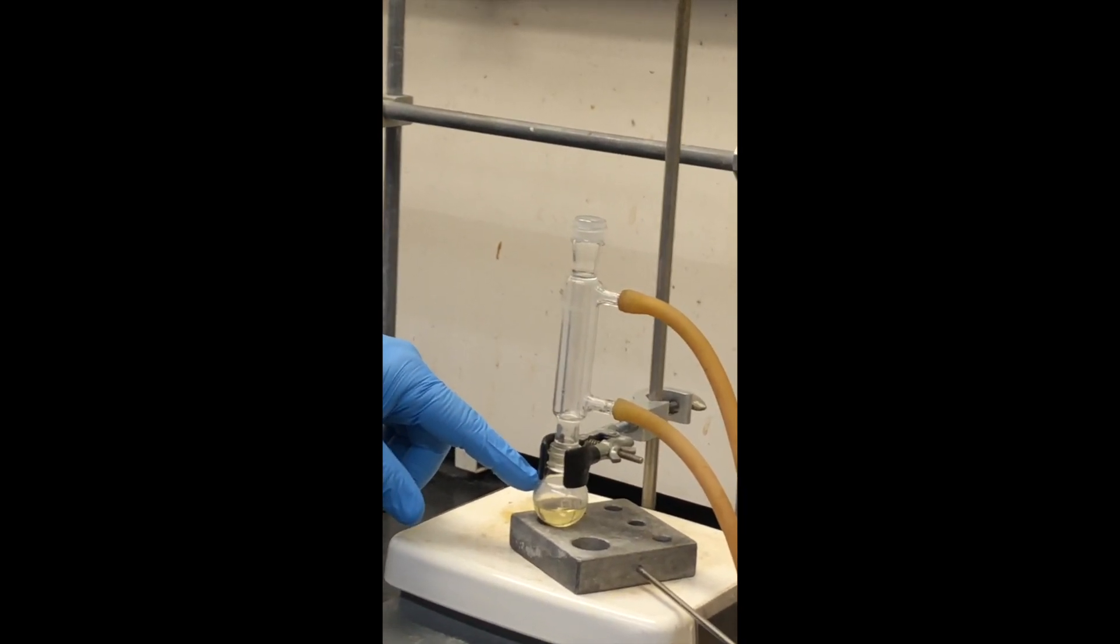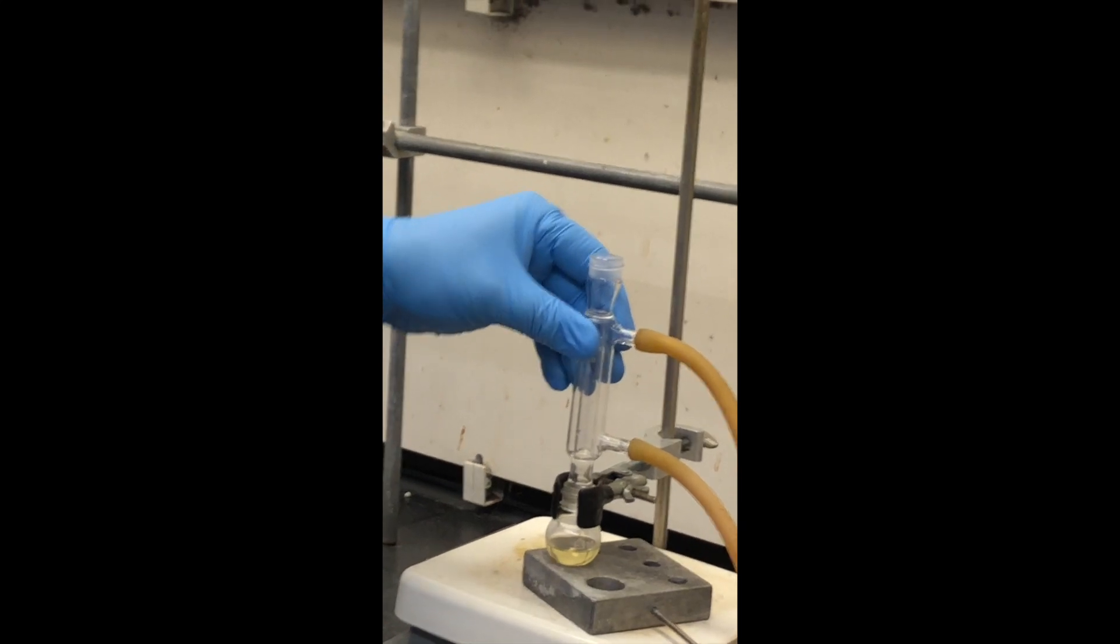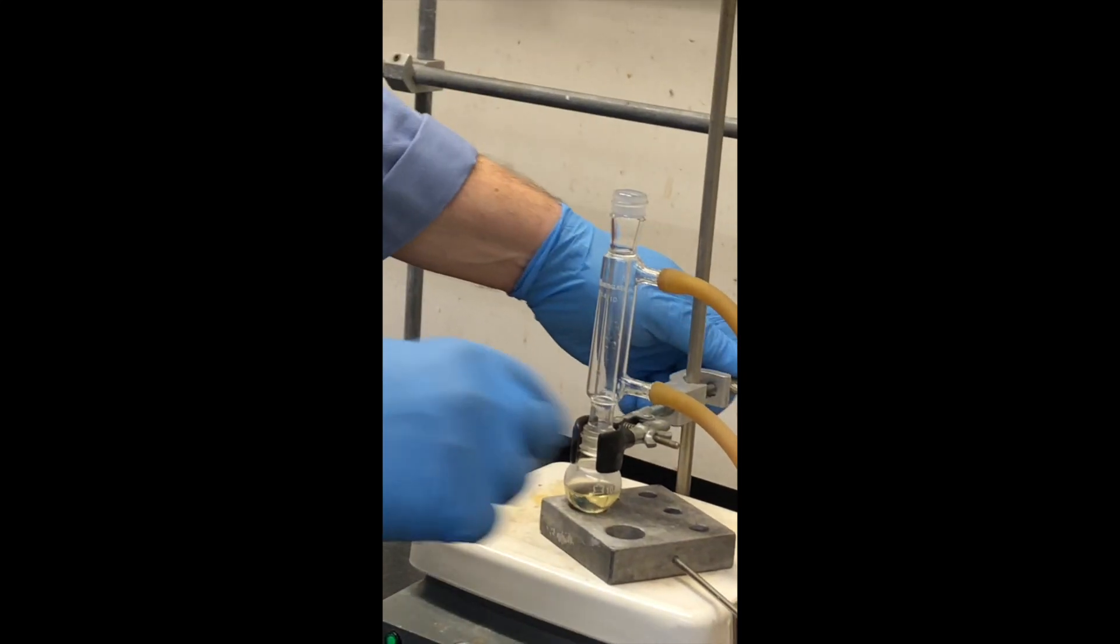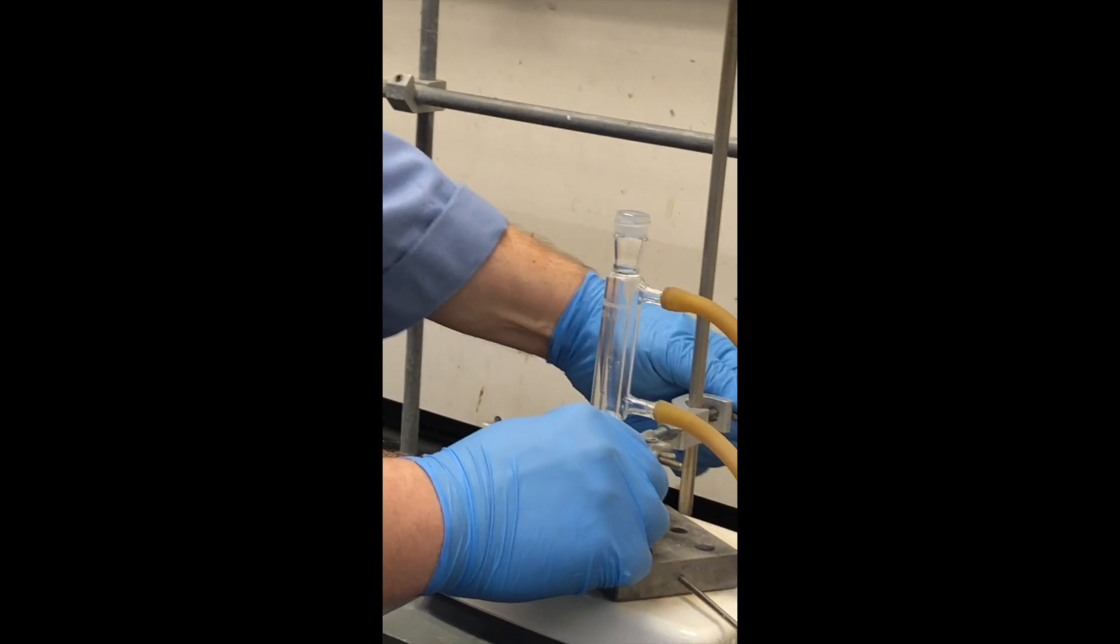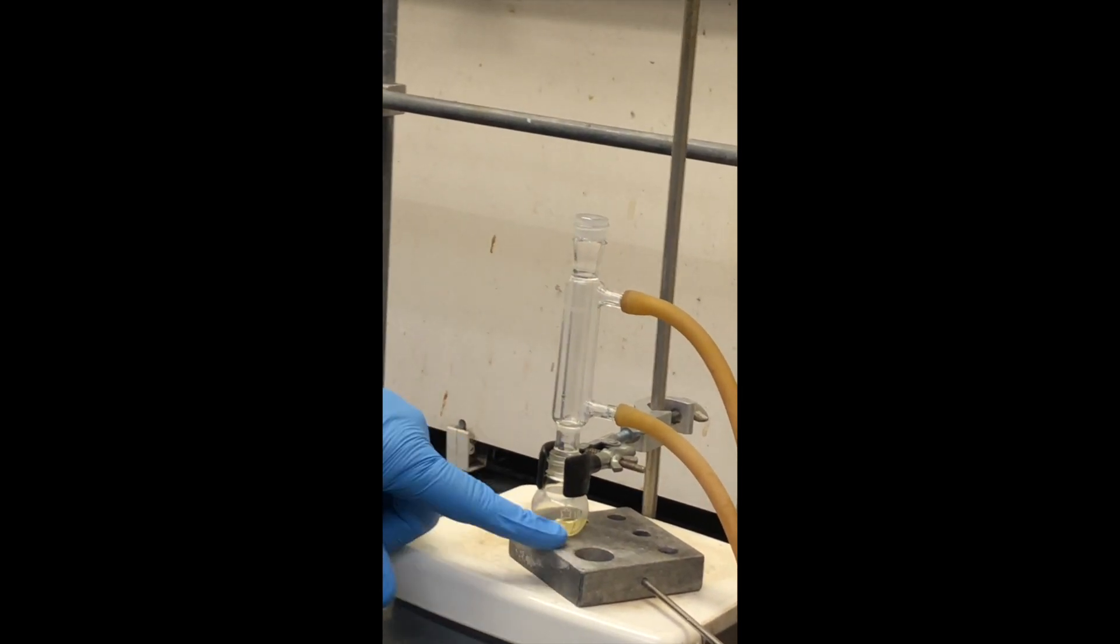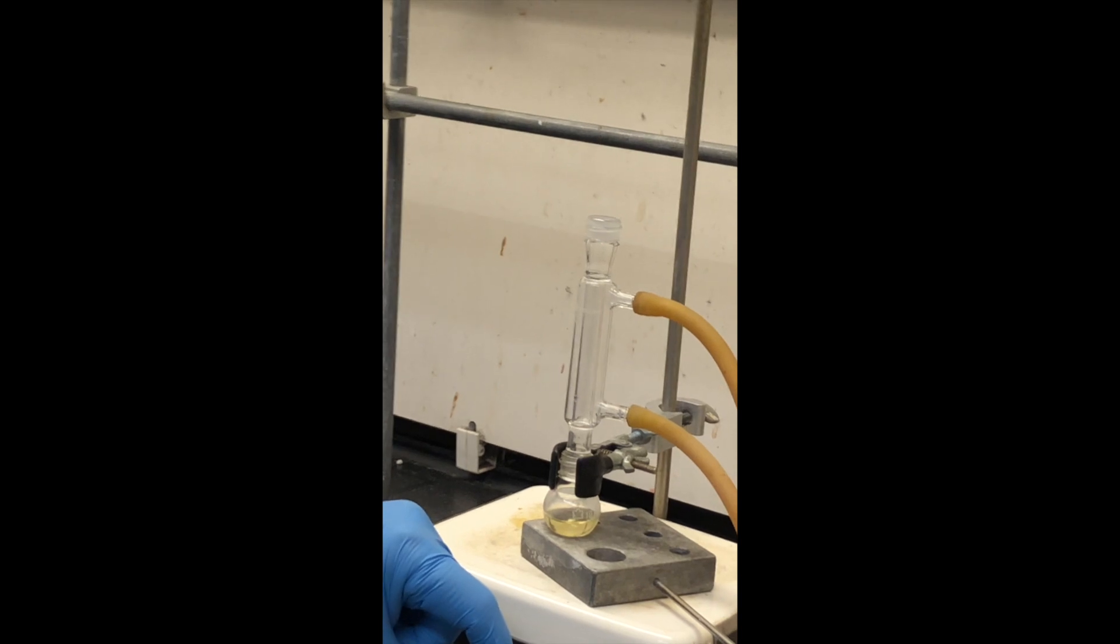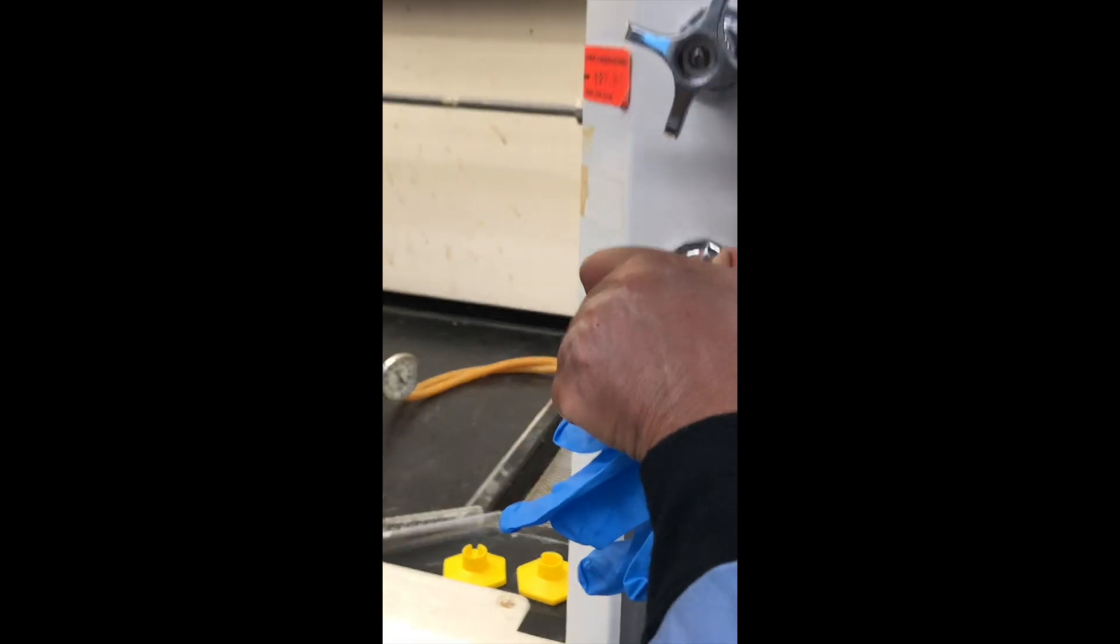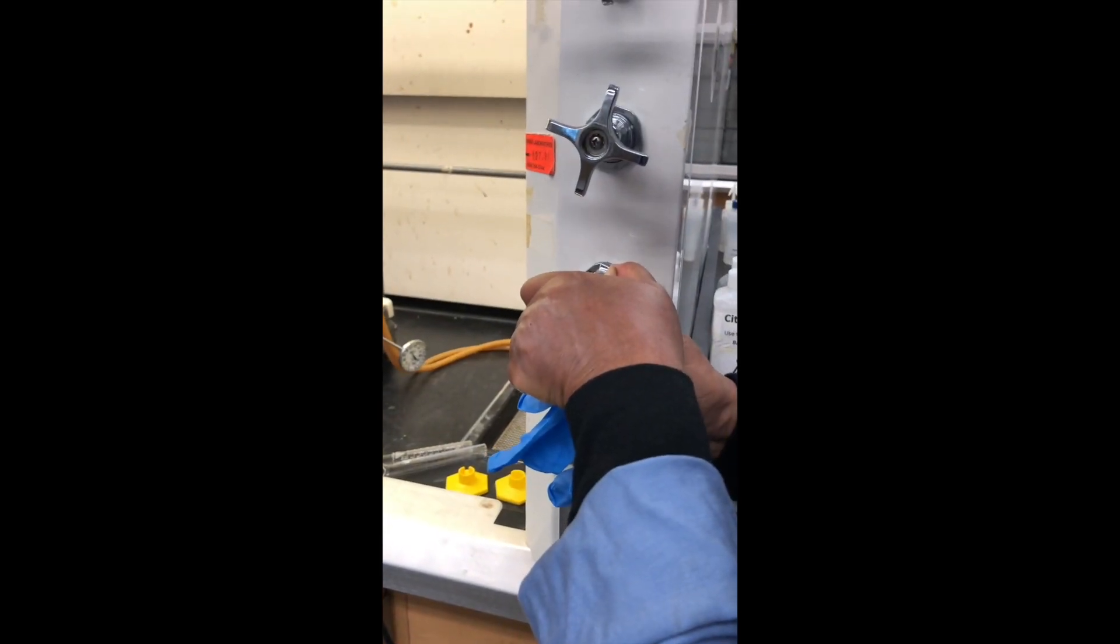We've also added boiling stones and we've clamped the flask securely over the hot plate and we have it snugly up against the aluminum block so that the heat is effectively transferred. The heat has just been turned on and we're going to turn on the water now so that we have our water jacket and condenser going, making sure that the tubes are nice and tight.